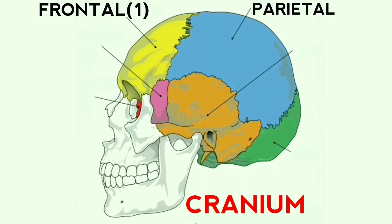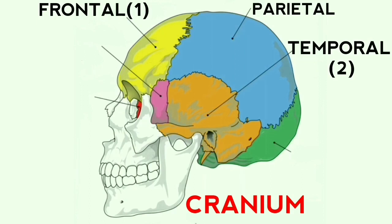The blue part of the skull is called the parietal bone. The next bone is the temporal bone. There are also two temporal bones in the human skull. These bones form the lower side of the skull and contain the middle and inner ear structures. They are denoted in orange color in the figure.